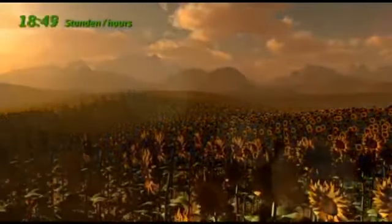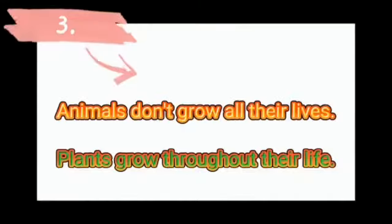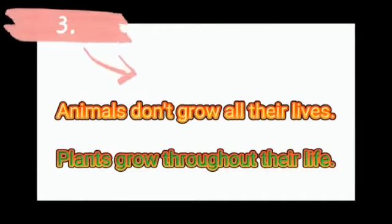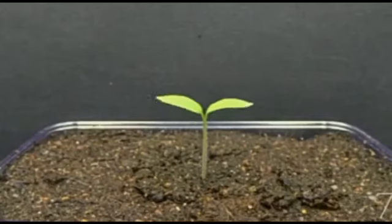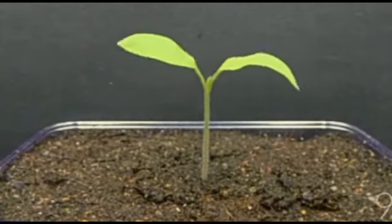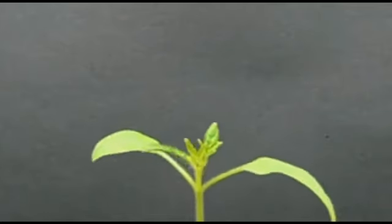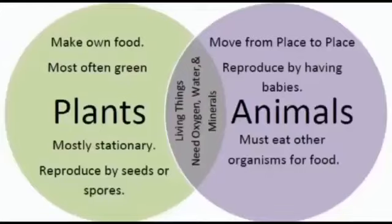But plants cannot move freely. They only show movement towards sunlight or the gravity of the earth, and sometimes water is responsible for their movement. Animals only grow during certain periods of their life, while plants show infinite growth throughout their life, thus making plants different from animals.